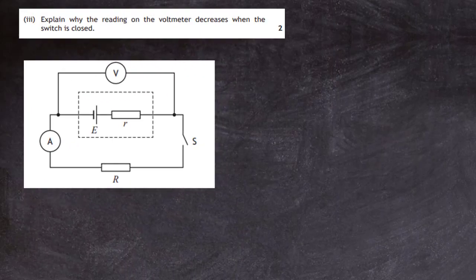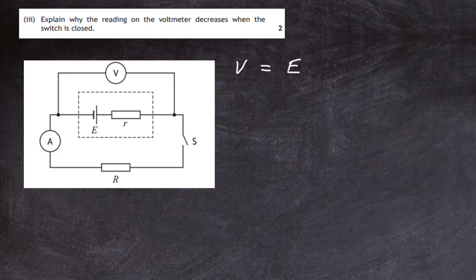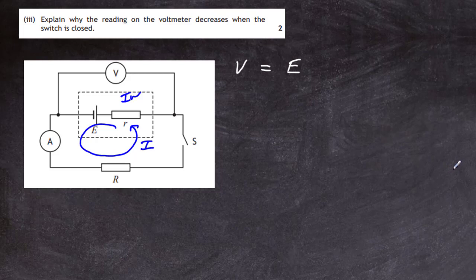Question 12a part 3: explain why the voltmeter reading decreases when the switch is closed. When the switch is open, the voltmeter reads the EMF, E. When the switch is closed, a current I flows around the circuit. That current passing through the internal resistance causes a potential drop of Ir across the cell. So the voltmeter reading V equals the EMF minus the voltage drop Ir, resulting in a reduced reading.